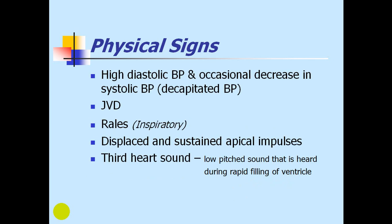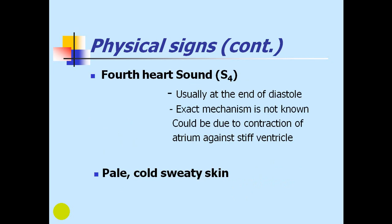Physical signs include a high diastolic and low systolic — what is called a decapitated blood pressure pattern. There is elevated JVP, inspiratory crackles at the base of the lungs, a displaced and sustained apical impulse, third and fourth heart sounds, and peripherally pale, cold, sweaty skin.